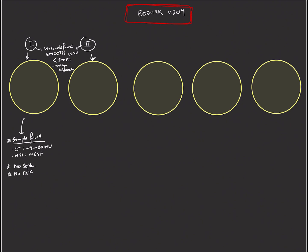Bosniak 2 cysts, on the other hand, are also cysts that you don't need to worry about, but internally they're going to have a few more features that make them a little bit more complex.